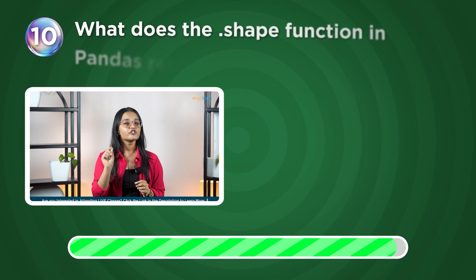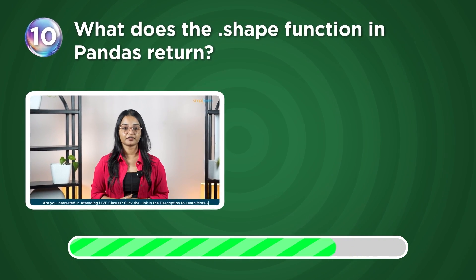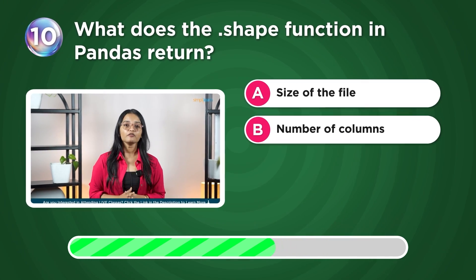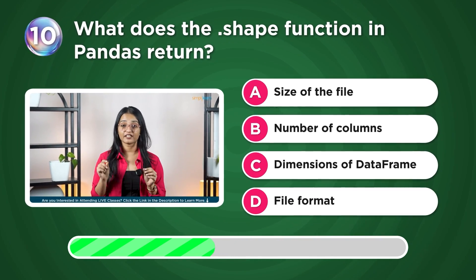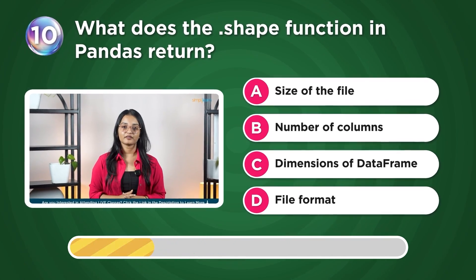What does the dot shape function in pandas return? Size of the file, number of columns, dimensions of the data frame, or file format?